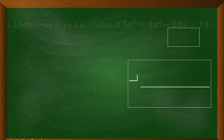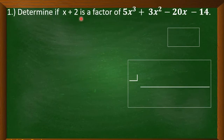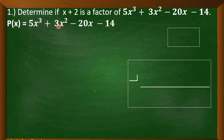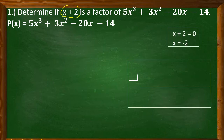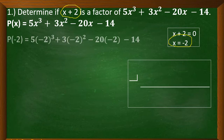Let's have the first example. Determine if x plus 2 is a factor of 5x cubed plus 3x squared minus 20x minus 14. We have to solve for our x. Our binomial is x plus 2. We equate it with 0 and solve for x, giving us x equals negative 2. Now we're going to substitute the variable x by negative 2.